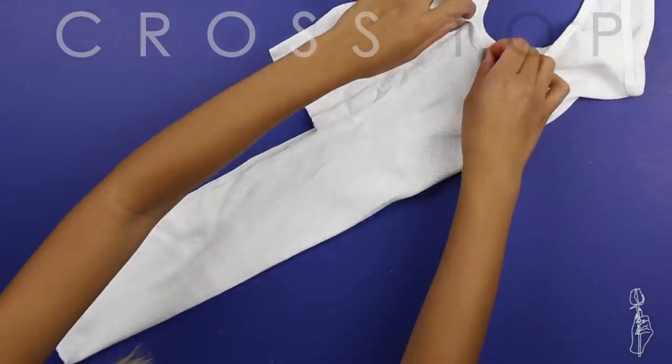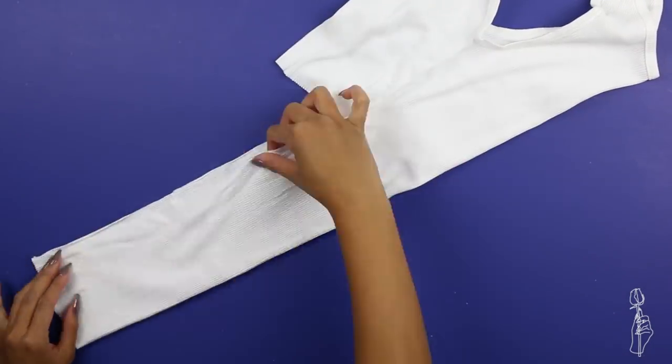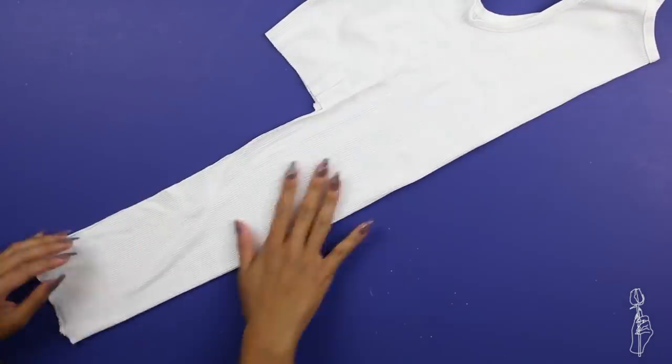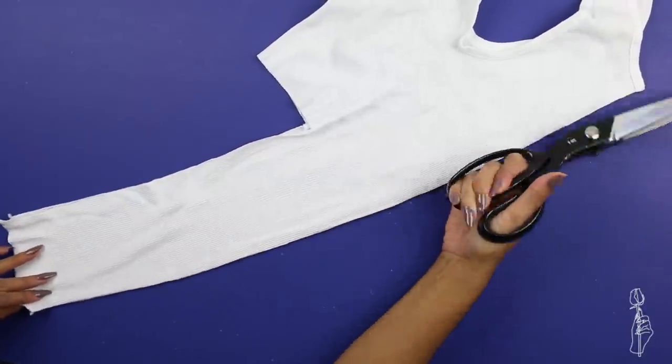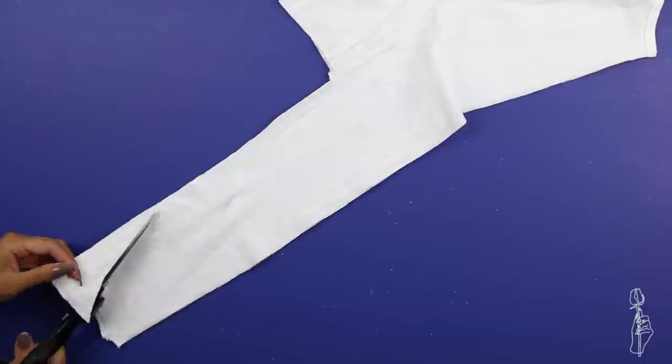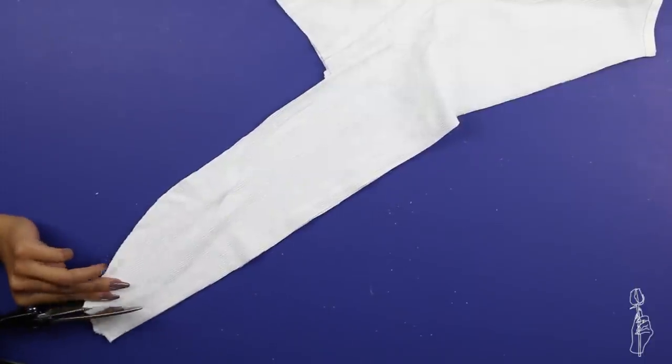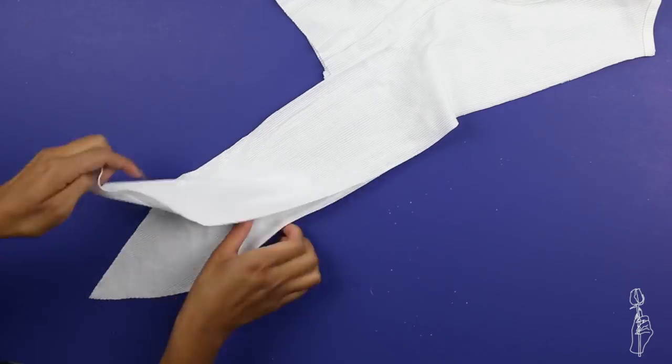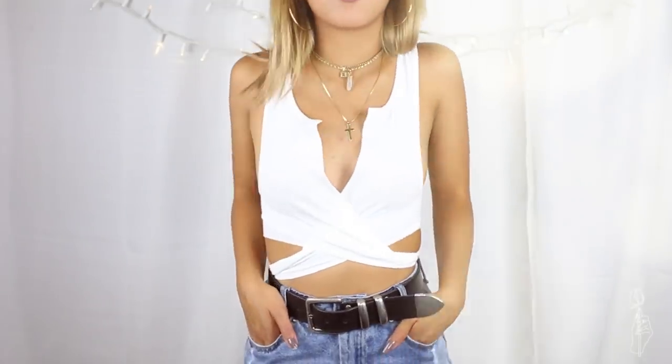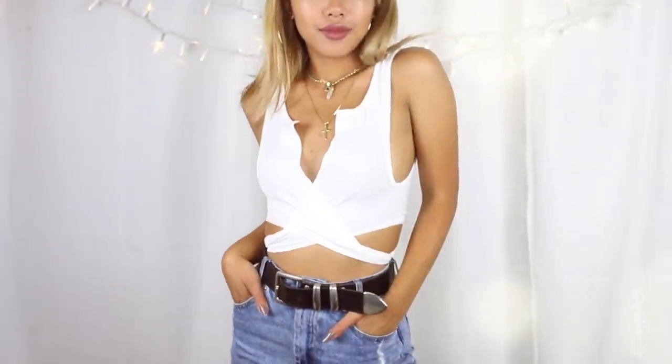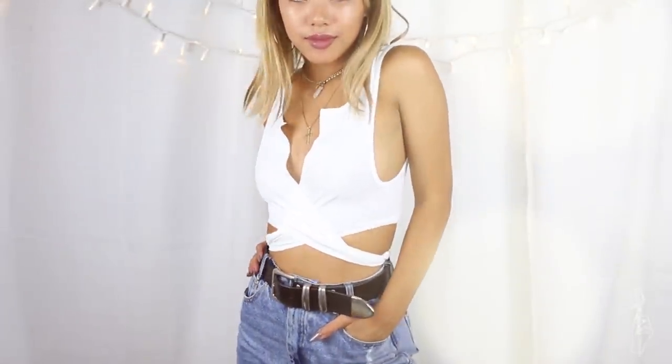Once you're done cutting, fold your tank top in half so that your invisible side seams meet, and then cut the center front. After that, you can leave your ties as is, or you can copy me and taper the ties. I just cut off the corners to make the ties somewhat a little bit cute. To wear the crop top, all you do is kind of wear it like a jacket, cross it over the front, and tie it in the back.